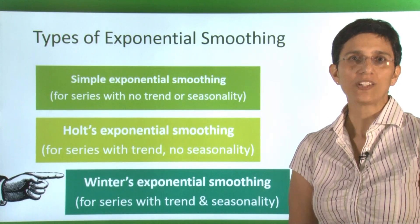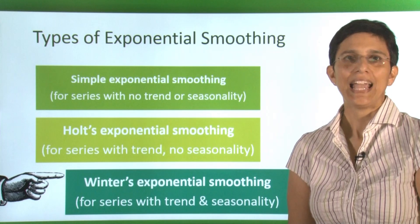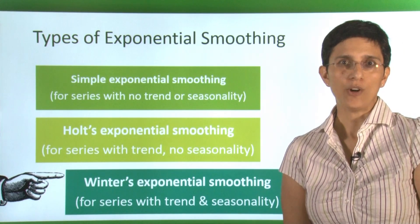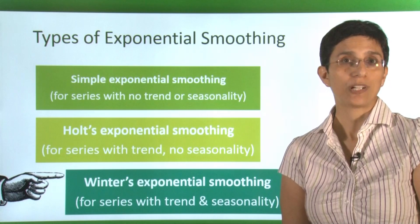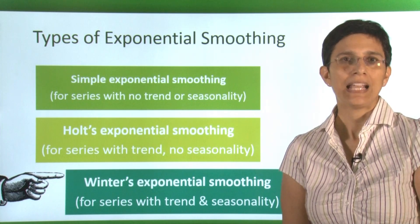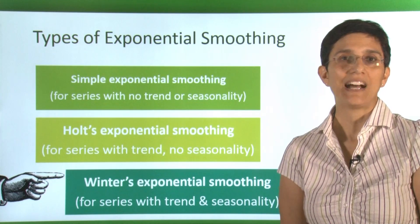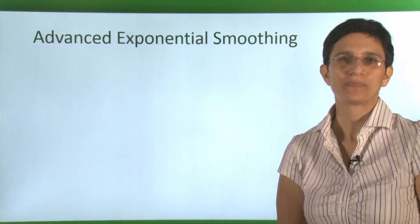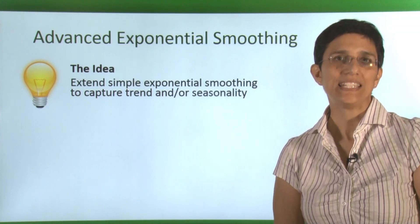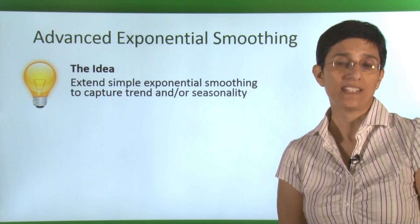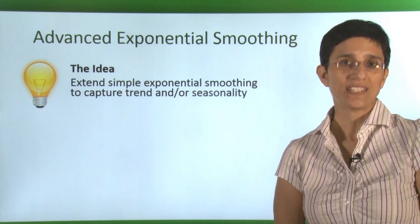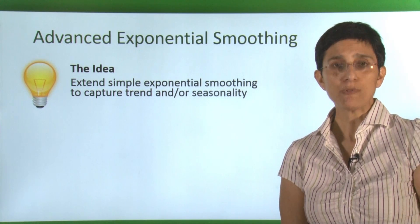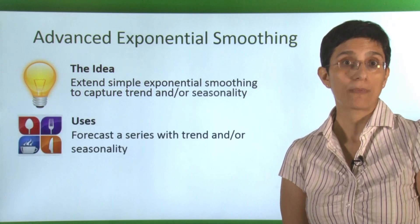We already looked at simple exponential smoothing and at Holt's exponential smoothing. In this video, we're going to look at Winters exponential smoothing, and this is going to work for series that have trend and seasonality. The idea of advanced exponential smoothing is to extend the ideas of simple exponential smoothing by capturing trend, seasonality, or both.